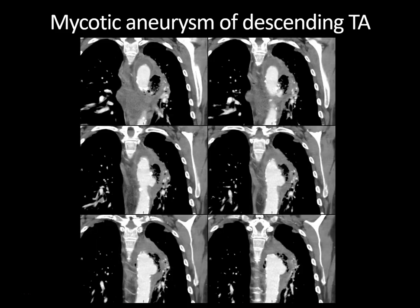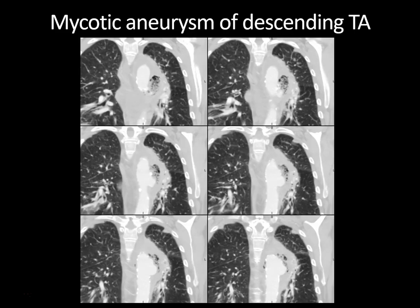Additional coronal reformatted images show the hyperenhancing rim surrounding fluid indicating aortitis, and the multilobulated irregular mycotic aneurysm surrounded by numerous foci of gas. Switching to lung windows confirms these are multiple foci of gas coalescing about the aneurysm, indicating an adjacent abscess. These carry a very high mortality and tend to be treated with endograft or surgical repair following antibiotic treatment.